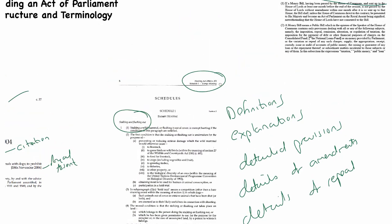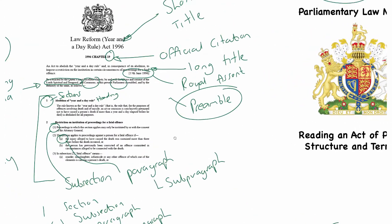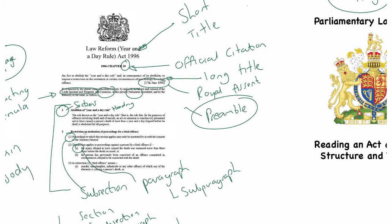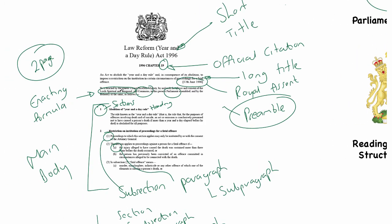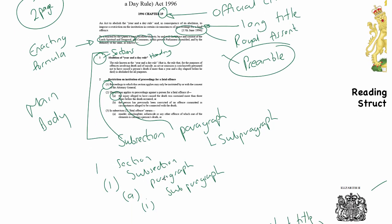That's all I'm going to cover in this one — structure and terminology. You should now be able to identify the short title, the official citation, the long title, the date of Royal Assent, a preamble if it's an older piece of legislation, the enacting formula, the main body, and how the naming convention works — sections, subsections, paragraphs, and subparagraphs. In the next video, we'll start to look at some of the other key parts of an Act of Parliament. Thank you.